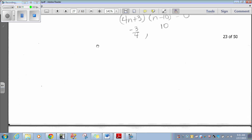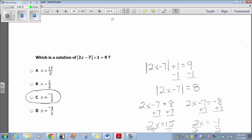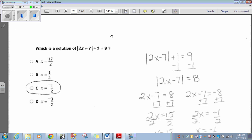D is the only one that that works. Okay? Let's move on to question 24. Which is a solution of the absolute value of 2x minus 7 plus 1 equals 9? Again, simple absolute value. Subtract 1 on both sides.